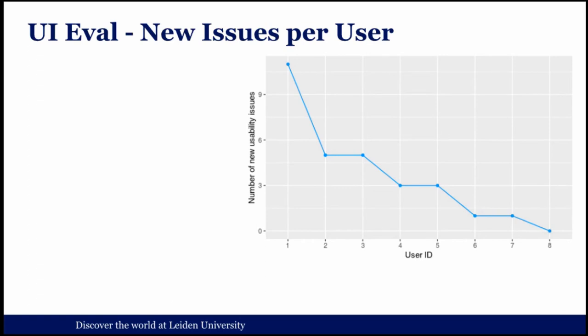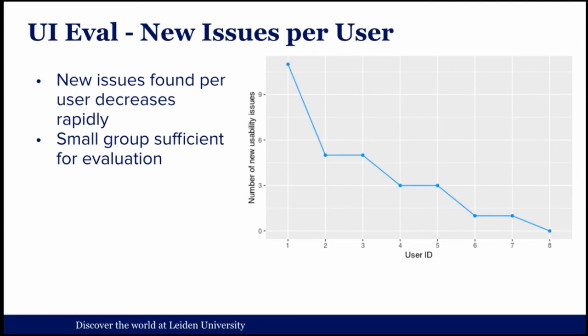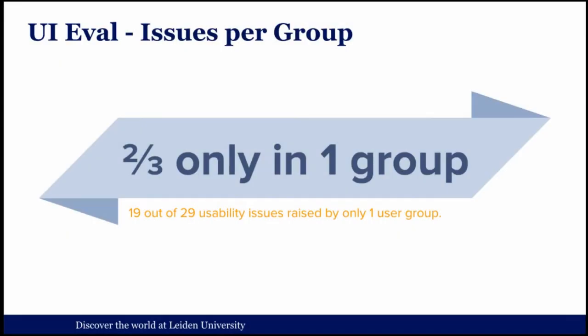Looking at the number of new issues per user added — where issues means both things that don't work well and things they'd like to add — we see that new issues found per additional user decrease quite rapidly. This basically means a small group is enough for these kinds of usability evaluations, as is backed up in other humanities fields: five to eight people tends to be more than enough. Also, 19 out of 29 usability issues were raised by only one of the user groups, which shows it's very important to collect a diverse user group.